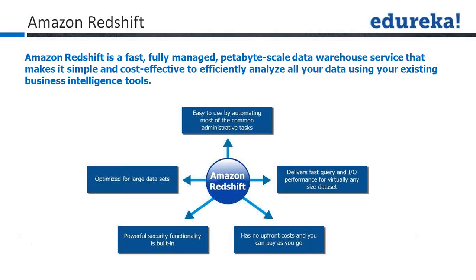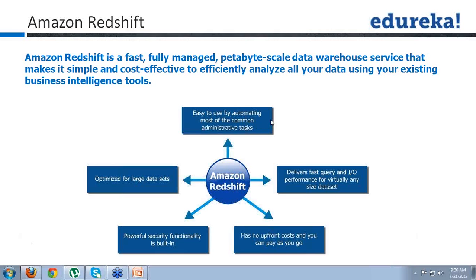Moreover, in a column database the processing is parallel processing. Your query will not execute on the same machine — it executes on two or three machines in parallel. This is a divide-and-conquer methodology. Just like how ten persons can do a task in ten days while one person would take three months, you divide the task among ten persons. Similarly, your major problem is divided into three or four parts and executed in parallel — that is how parallelism comes into the picture.